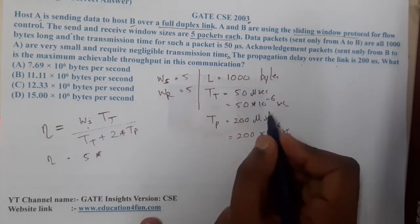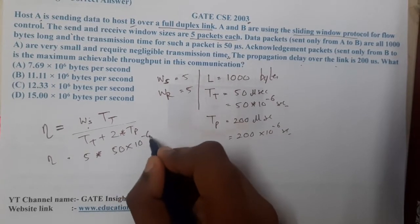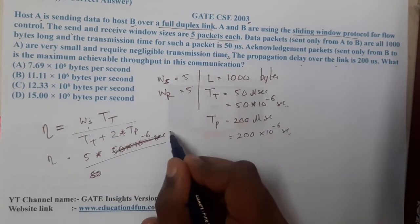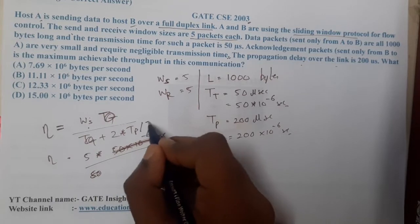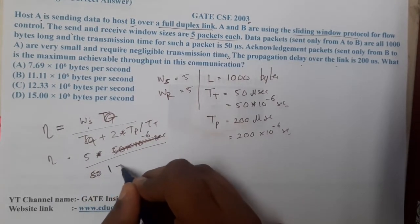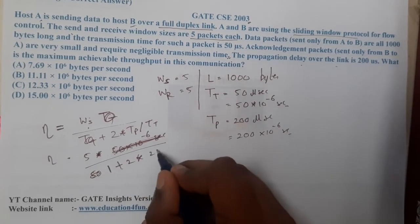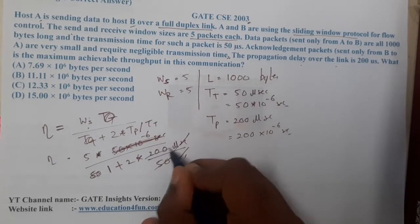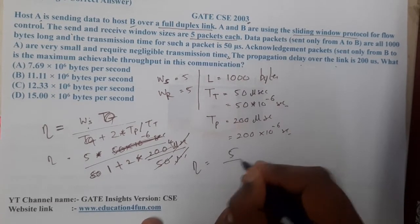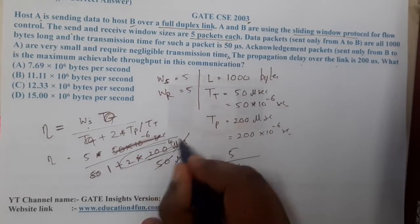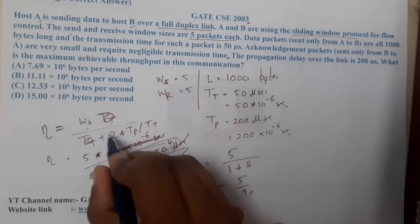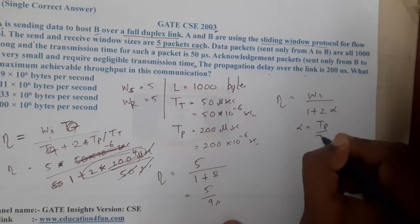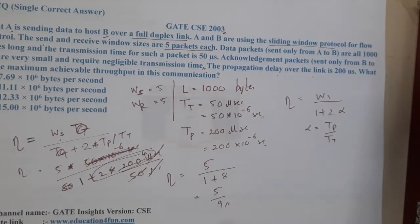Plugging in the values: TT = 50µs, TP = 200µs. So efficiency = 5 / (1 + 2 × (200/50)) = 5 / (1 + 2×4) = 5 / (1 + 8) = 5/9. The formula used is efficiency = window size / (1 + 2α), where α = TP/TT.